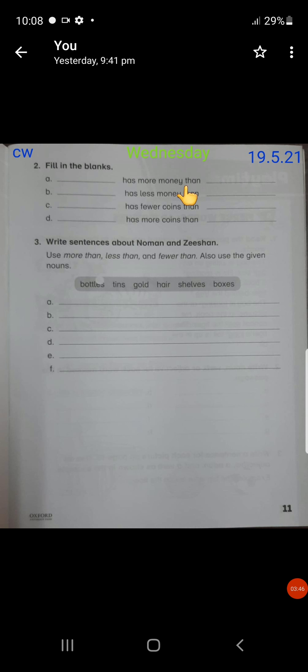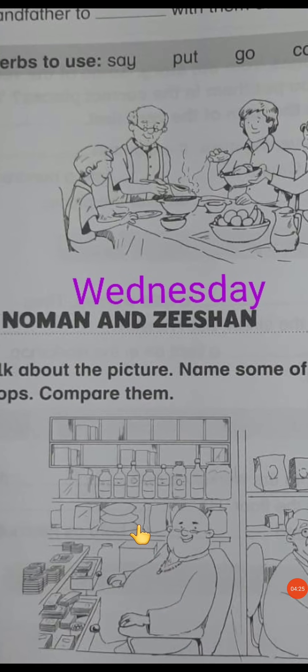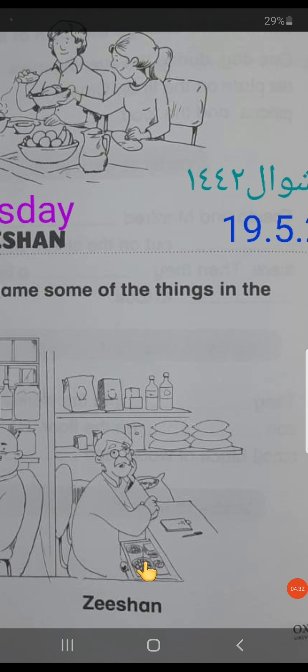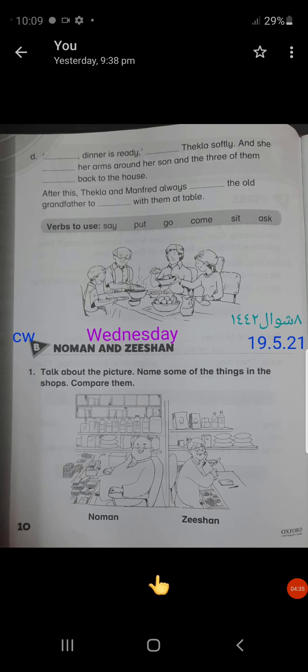Naman has more money than Zishan, and Zishan has less money than Naman. Zishan has more coins than Naman and Naman has fewer coins than Zishan. This is very simple, very easy and this is what you have to write over here. I know you are all very smart. You can do it by your own but let me help out too. In part A you have to write: Naman has more money than Zishan. Part B: Zishan has less money than Naman. Part C: Naman has fewer coins.